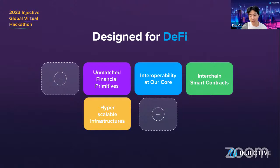Injective is perhaps one of the most interoperable blockchains. We are IBC enabled, which lets you access chains such as Osmosis, Juno, and Terra with ease. We've also built one of the first bridges to Ethereum and became the first Cosmos-based chain to have Metamask compatibility, which is a major gateway to onboard Ethereum users.